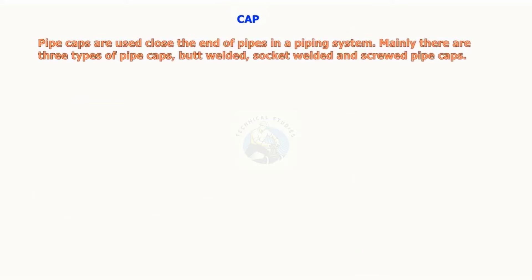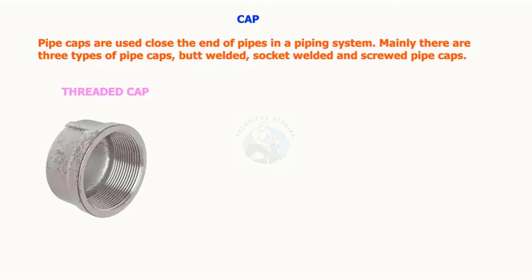Pipe caps are used to close the end of pipes in a piping system. Mainly there are three types of pipe caps: butt welded, socket welded, and screwed pipe caps.